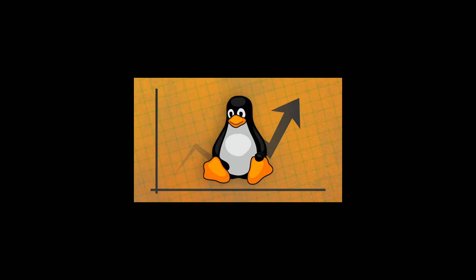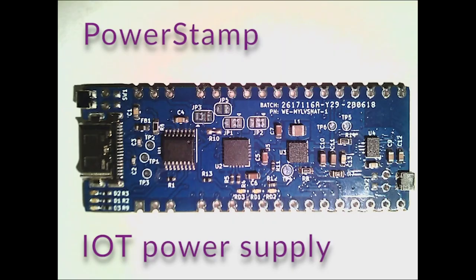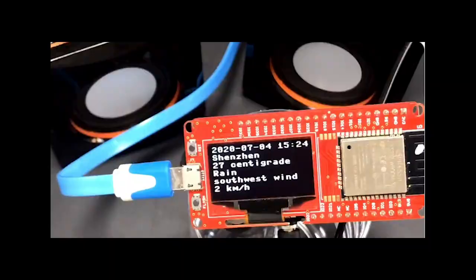Linux market share climbed to an all-time high in June — details on omgubuntu.co.uk. PowerStamp is a USB-C power management module that provides power source management and charge control for IoT devices, programmable in MicroPython, available on Kickstarter. Check out MyronWW on Twitter for details. MakerFabs posted to GitHub a guide to building a MicroPython TTS weather broadcast based on ESP32 and audio.